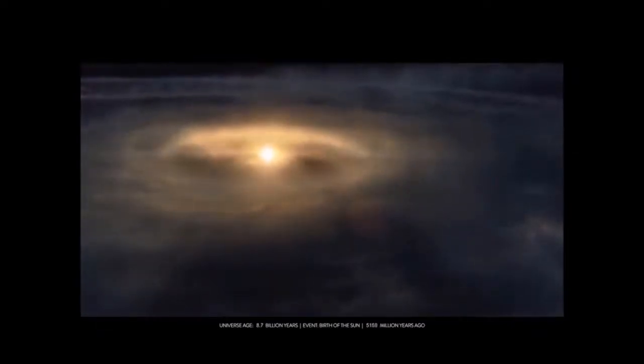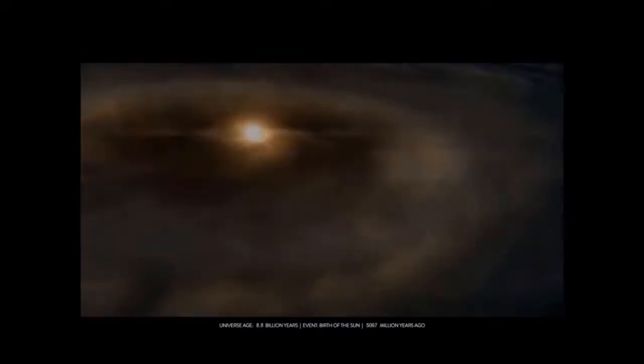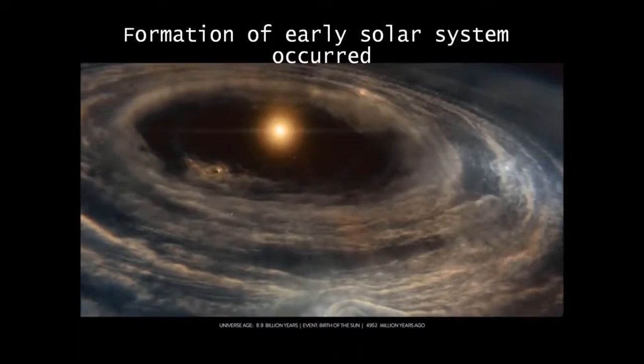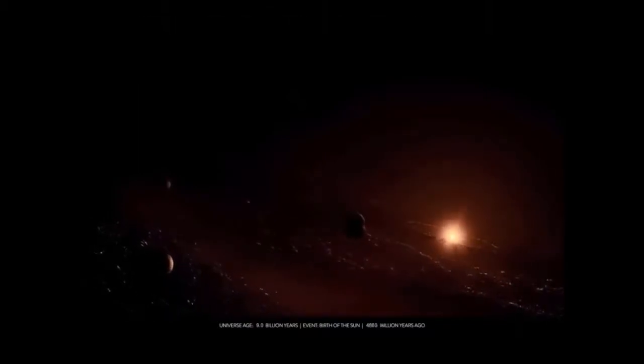The star was born that we would come to know as the Sun. Around it, a network of planets formed, among them was the Earth.